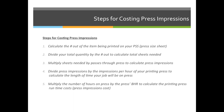Once we know the total number of impressions, we're going to divide that by the number of impressions, or number of sheets, the printing press can take per hour. So let's say that you have a million impressions and your press can run 10,000 impressions per hour — if you divide the two, you'll get the total number of hours on press.